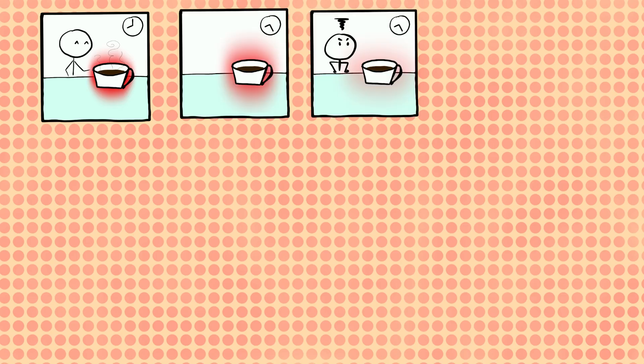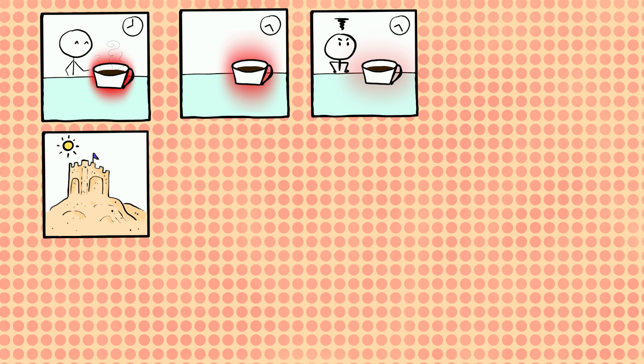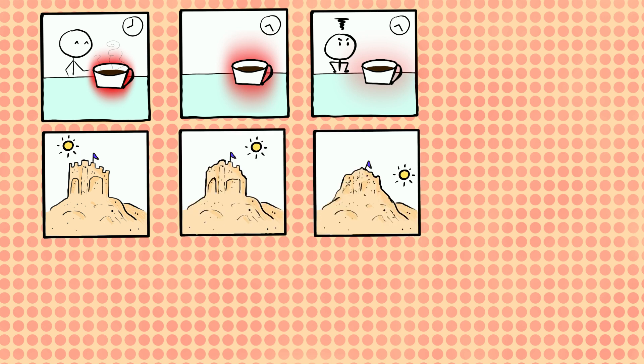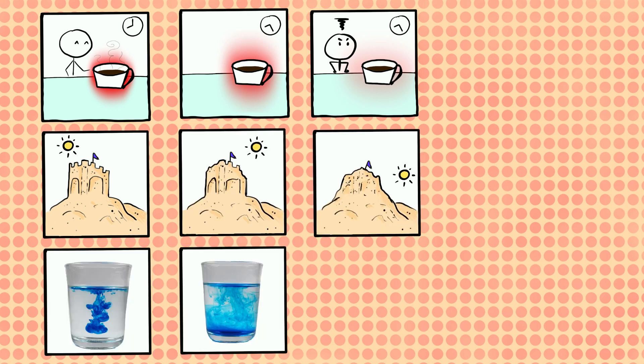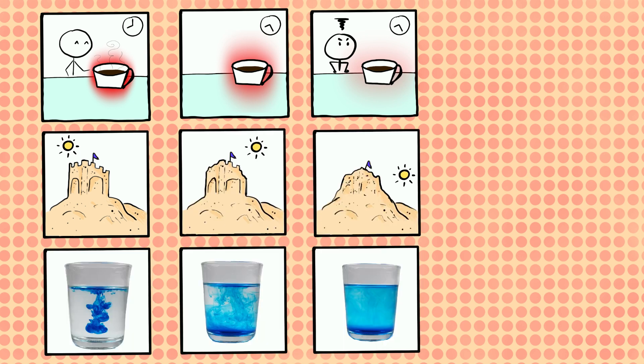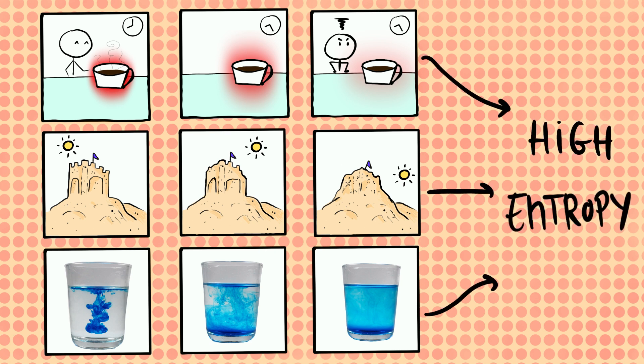Coffee cools down if left in a room, sandcastles crumble, ink mixes with water. All these processes happen in this particular order and not the other way around. They all seem to follow a route towards disordered and higher entropy states.